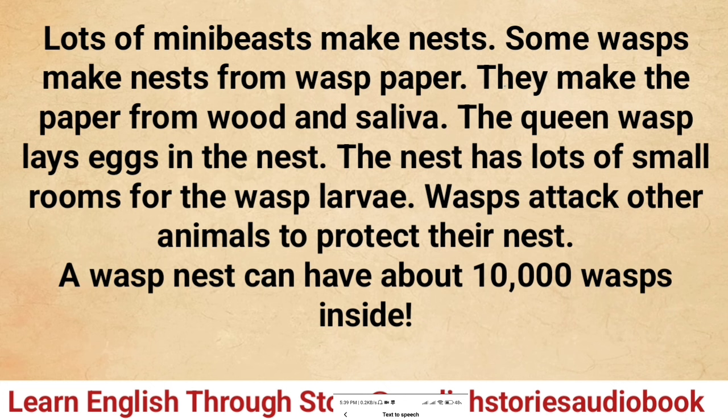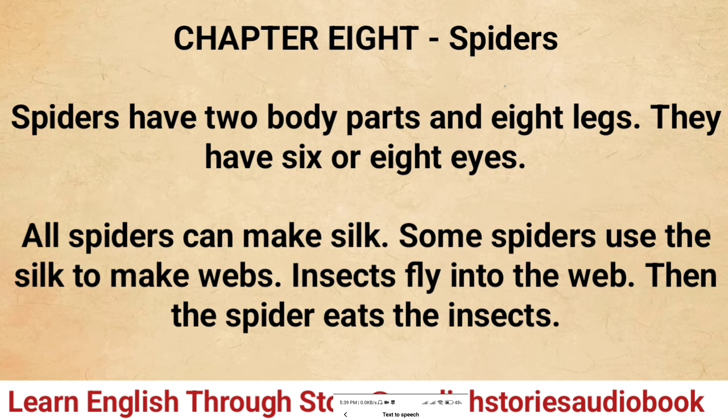The queen wasp lays eggs in the nest. The nest has lots of small rooms for the wasp larvae. Wasps attack other animals to protect their nest. A wasp nest can have about 10,000 wasps inside.